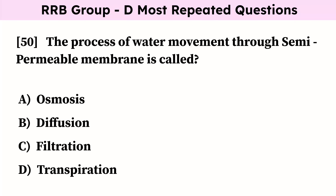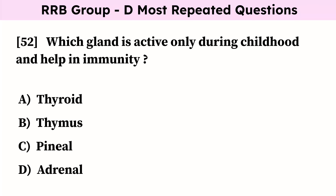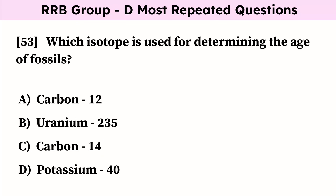The process of water movement through a semi-permeable membrane is called? Correct answer is osmosis. Approximately how many neurons does the human brain contain? Correct answer is 86 billion. Which gland is active only during childhood and helps in immunity? Correct answer is thymus. Which isotope is used for determining the age of fossils? Correct answer is carbon-14.